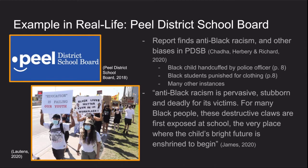A quote which I found to be very powerful is by Royce and James, who says: 'Anti-Black racism is pervasive, stubborn, and deadly for its victims. For many Black people, these destructive claws are first exposed at school, the very place where the child's bright future is enshrined to begin.' Black students are targeted so commonly in the Peel District School Board that wearing big hoop earrings, do-rags, and hoodies are not uncommon reasons for Black students to be kicked out of classrooms and even suspended.